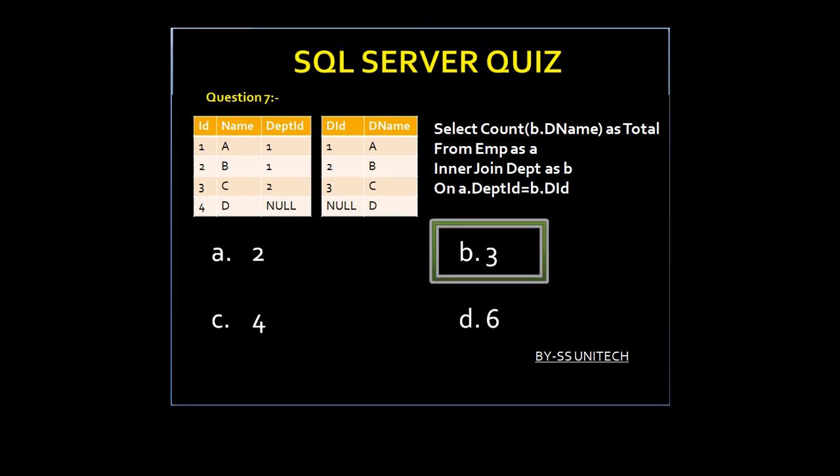Time up. Option B is true, because again two null values are treated as different values. Let's move to another question.